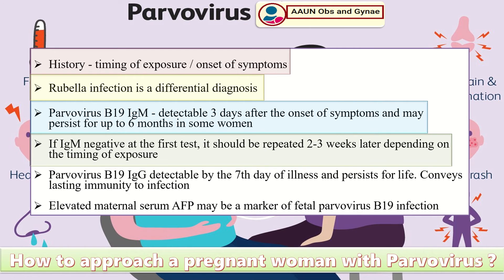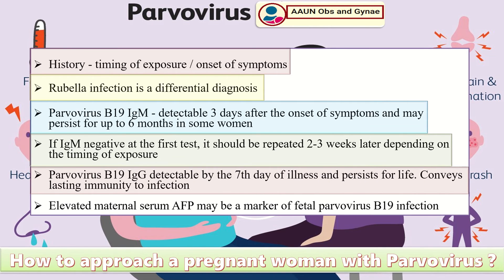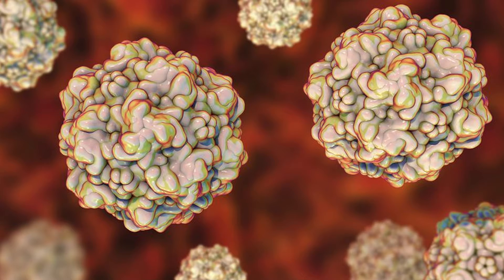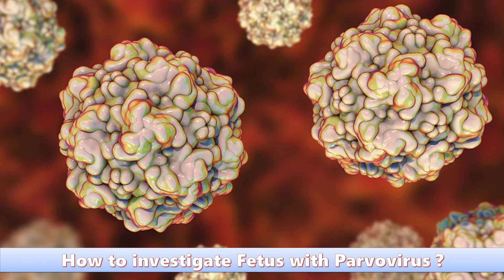Parvovirus B19 IgG is detectable by the seventh day of illness and persists for life, conveying lasting immunity to infection. Elevated serum alpha-fetoprotein may be a marker of fetal Parvovirus B19 infection.